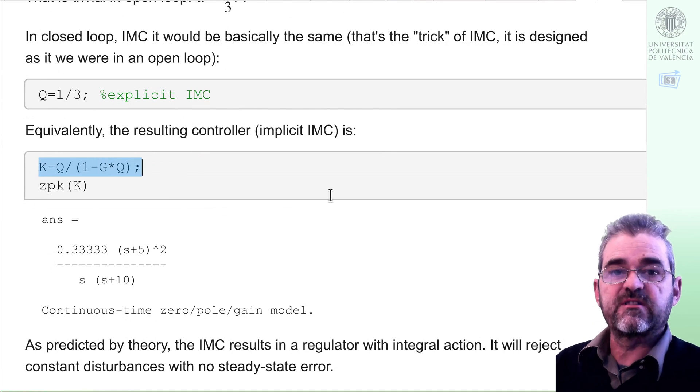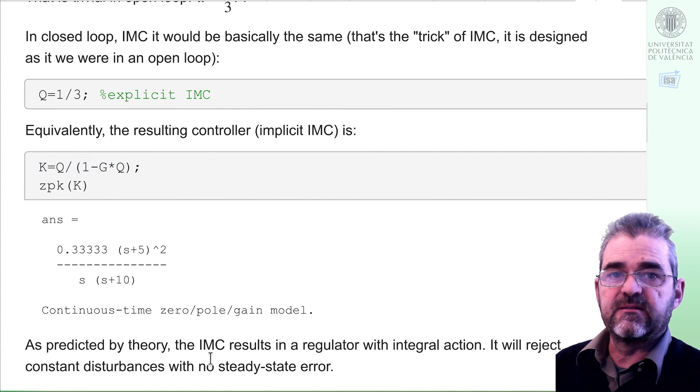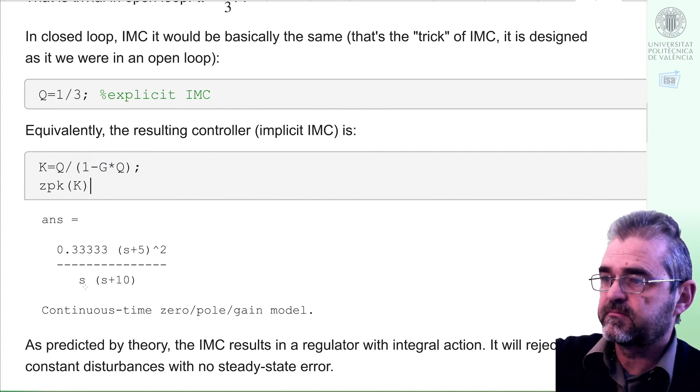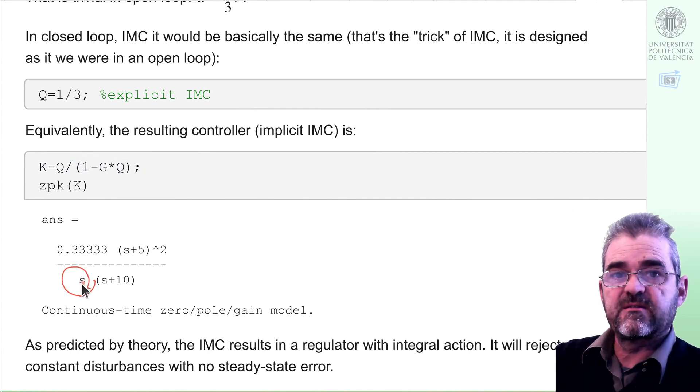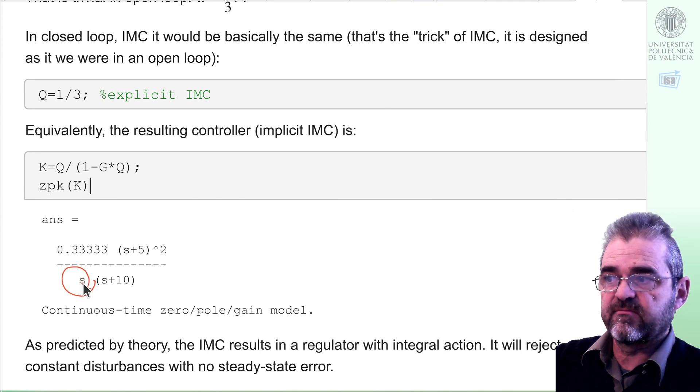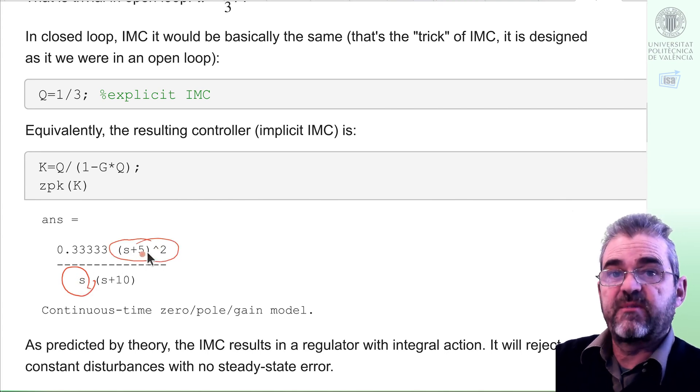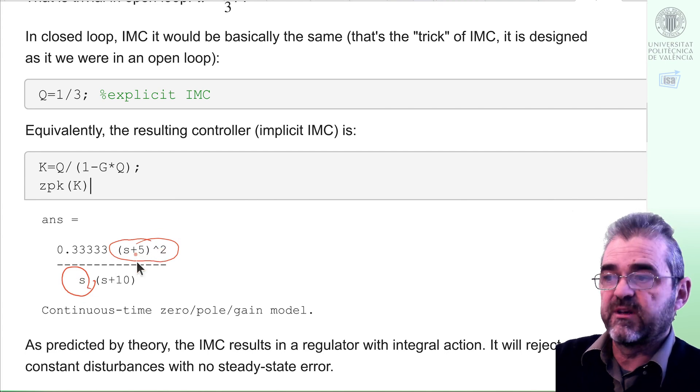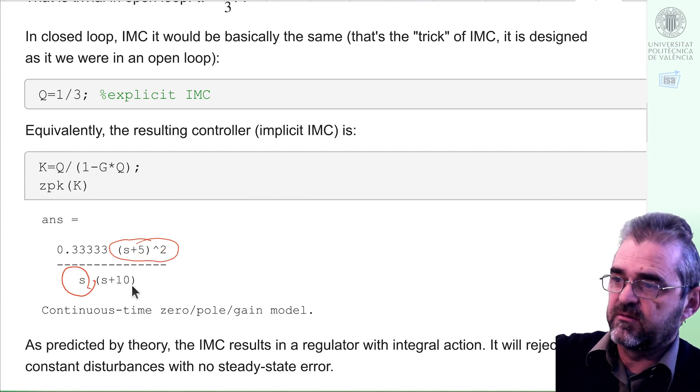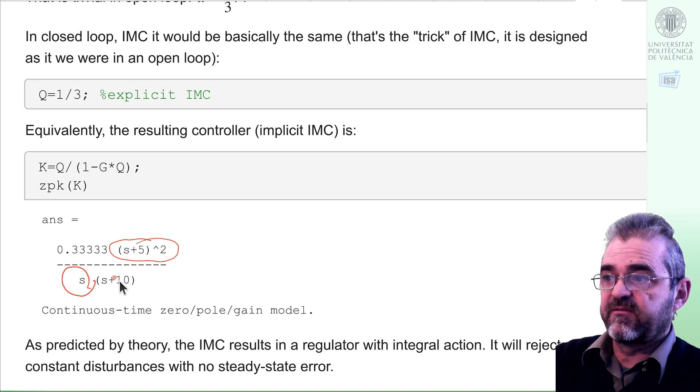This formula transforms an IMC controller to a standard one in which input is error. So this is the actual regulator we are designing. As theory predicts, we have integral action, and also predicted by theory, there is some cancellation of the plant dynamics. And in this case, the controller also adds a fast pole.